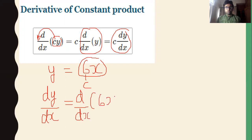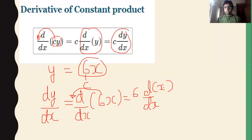The rule says that if there is any constant term, it will come out of the differentiation. So finally you will get 6 times dy by dx of x. We will apply the power rule as we have discussed in the previous video. Those who have not seen it, first watch the previous video and then continue with this one.